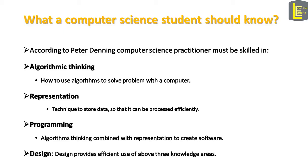Then we have programming, which refers to writing code or creating software. While writing code, you will need to make use of algorithms and understand how the computer is going to process your instructions. That means you will have to combine algorithmic thinking and your knowledge of representation to create software or programs. Design embodies about three areas to create hardware and software that is easy to use and learn.